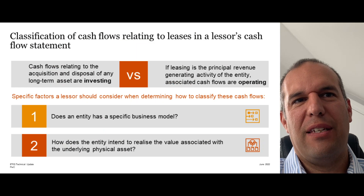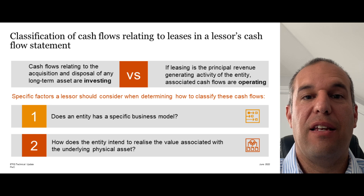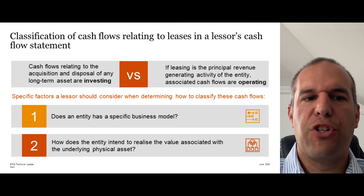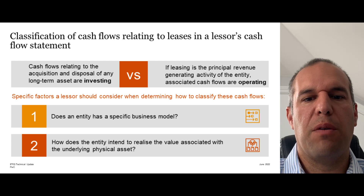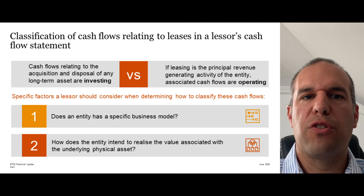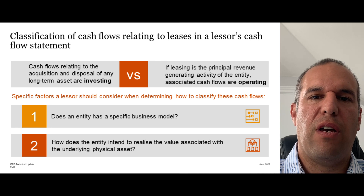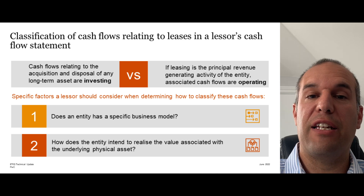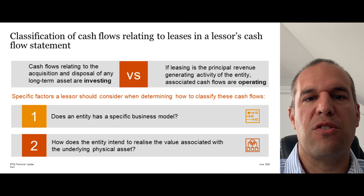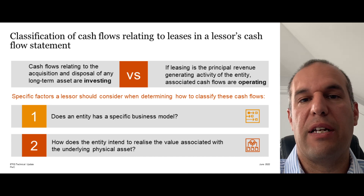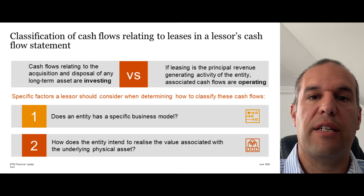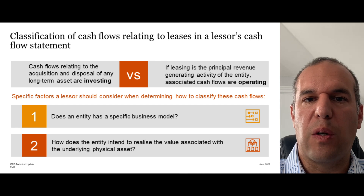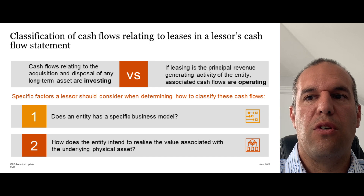Let's start by talking about the classification of cash flows relating to leases in the lessor's cash flow statements. This is often a tricky scenario because you have one part of IAS 7 that tells you the acquisition and disposal of long-term assets is an investing cash flow, and another part that tells you if something is a principal revenue-generating activity, it should be an operating cash flow. Sometimes it can be really tricky for lessors who have leasing as their primary business to work out whether the inflows and outflows relating to their leases are operating or investing cash flows. It might be helpful to think of it this way: the general rule is when you acquire or sell a long-term asset, it's an investing cash flow.